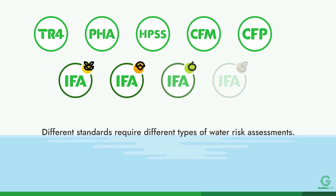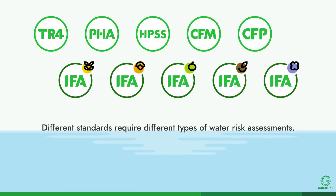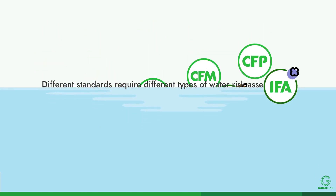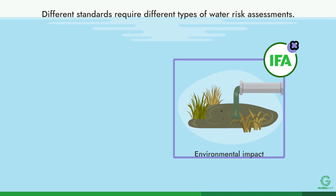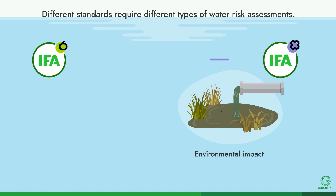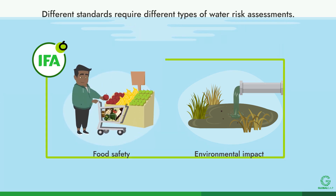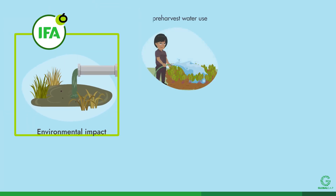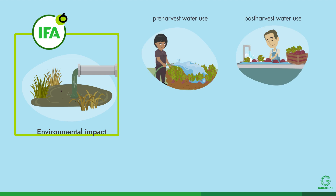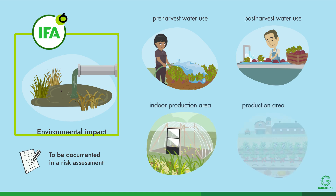Different standards require different types of water risk assessments. For example, integrated farm assurance for flowers and ornamentals emphasizes the impact water quality may have on the environment. Under IFA for fruit and vegetables, food safety must be considered in addition to environmental impact. Both pre- and post-harvest water uses must consider the environment and be documented in a risk assessment, including both indoor and outdoor production areas.